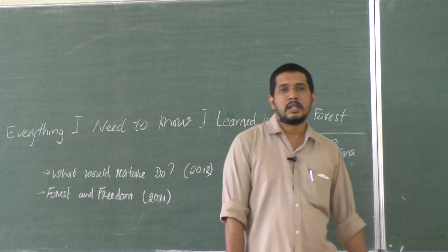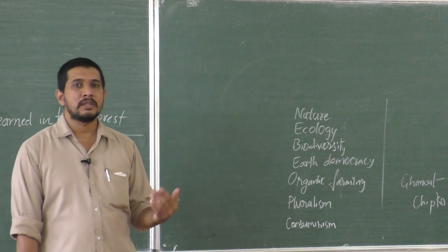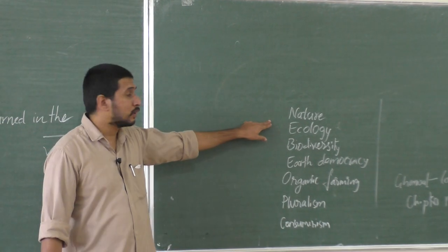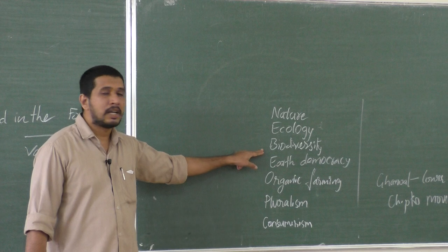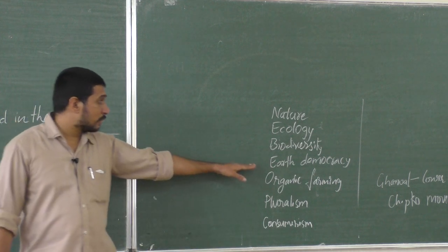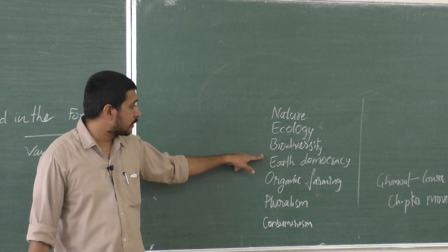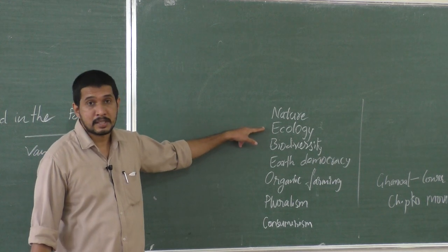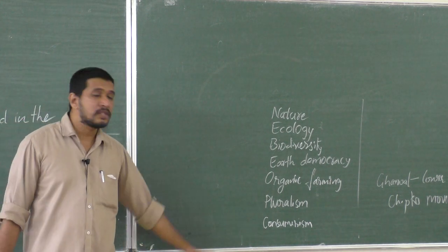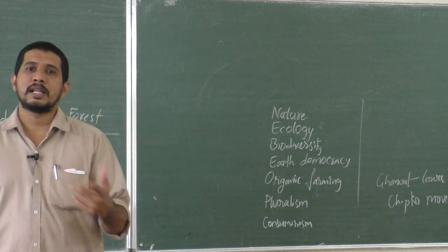What are the things she discusses in this chapter? First, nature — she talks about how nature influences us and how much importance should be given to it. Then ecology and biodiversity are key points. She also introduces us to the concept of earth democracy, which most of us may not have come across. Then organic farming, and how organic farming and biodiversity are interconnected. Finally, pluralism and consumerism — how consumerism is affecting nature.